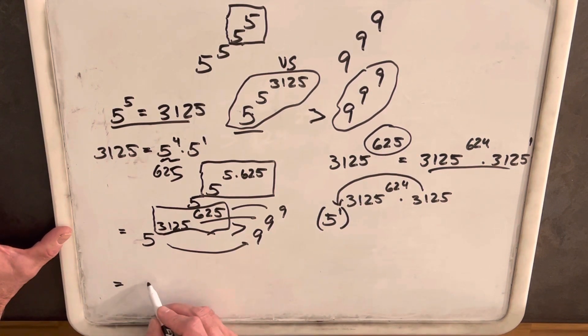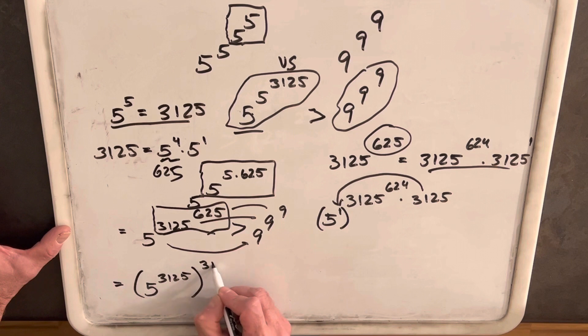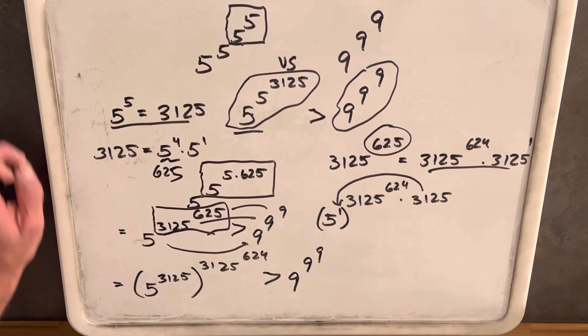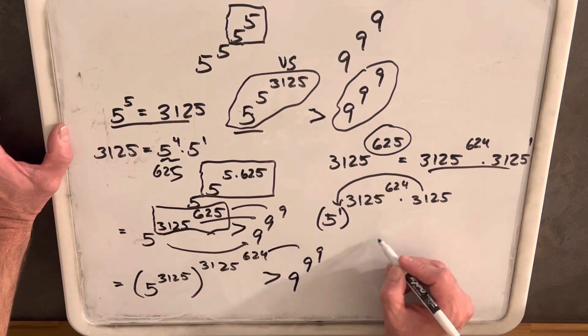And then what we're going to have is, so that's 1 times 3,125, so we're going to have the base of 5 to the 3,125 to the 3,125 to the 624 is greater than 9 to the 9 to the 9.